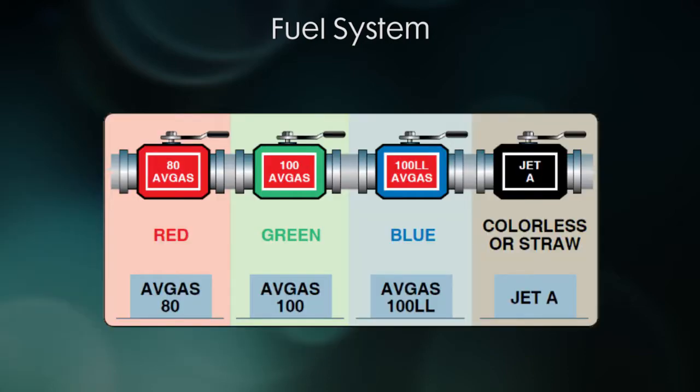Aviation fuel is color coded. Most airplanes will take 100 low lead and it's blue. There's also octane 100 which is green or octane 80 which is red. The most popular and most available fuel is 100 low lead and that's what you will be using. Jet A is used for jet or turbine engines and it's colorless and smells like pickles, and that last part is just my opinion.